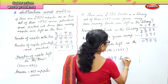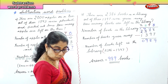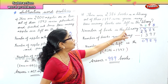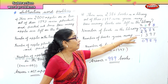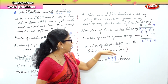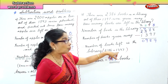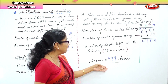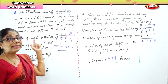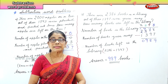Total number of books in the library: 2,386. Number of books given away: 1,397. Therefore, number of books left in the library: 2,386 minus 1,397 equals 989 books. So we learned to work out subtraction word problems. We have done 2 sums — maybe we will do some more.